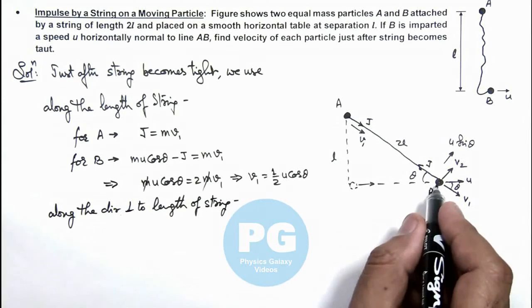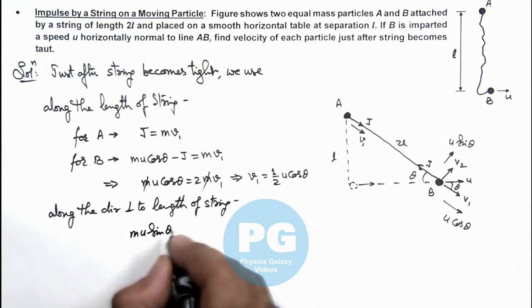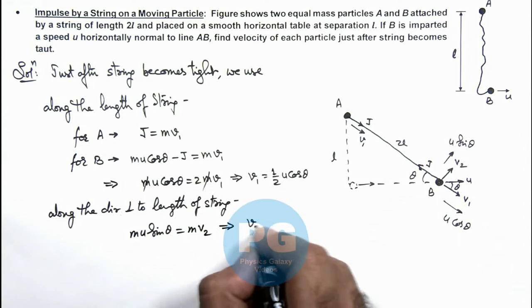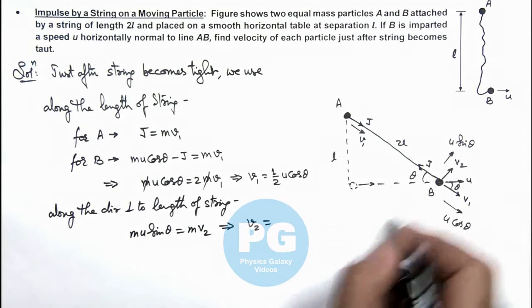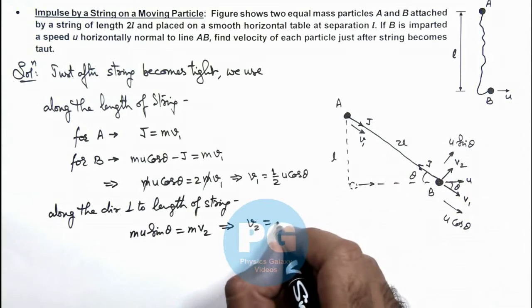Its initial momentum was mu sin theta and as no impulse is imparted, this must be same as mv2. This implies we are getting the velocity component perpendicular to string direction that remains same which is u sin theta.